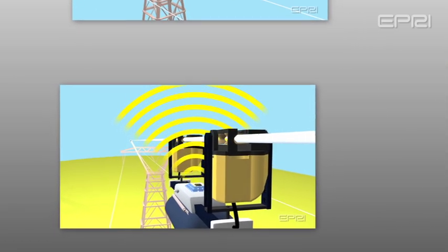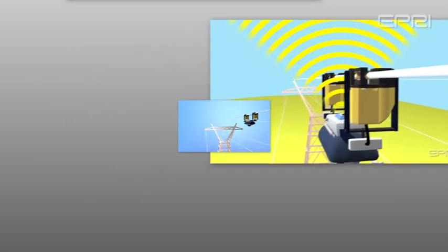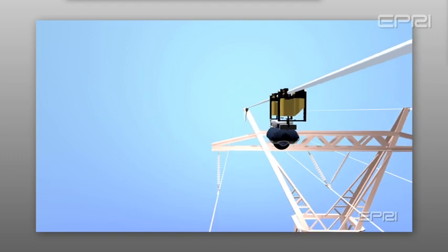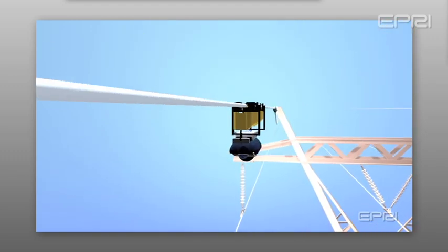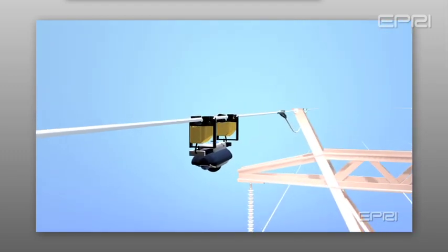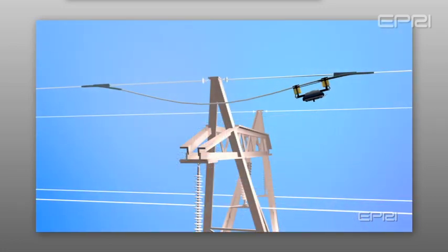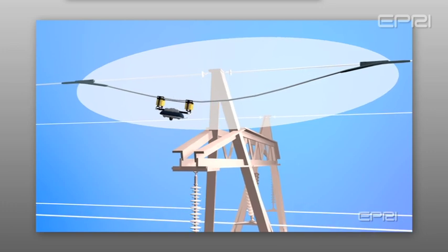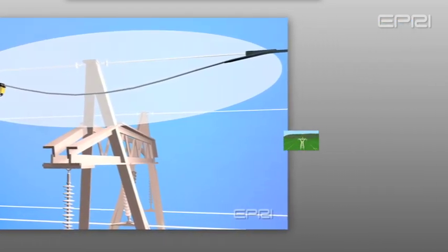The robot moves along the shield wire installed above the current-carrying conductors of a transmission line. In order to traverse structures and obstacles, the robot utilizes bypass systems that are permanently installed on the transmission line at the time of construction.